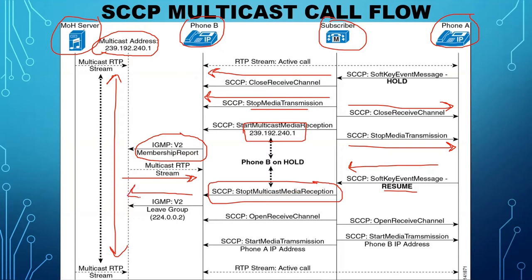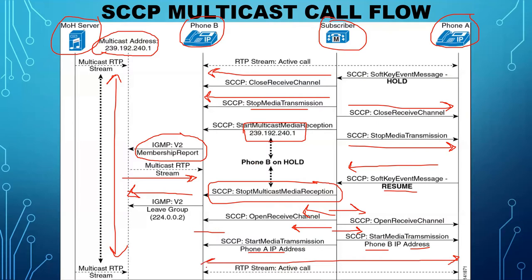After Phone B leaves the multicast group, the subscriber sends Open Receive Channel to both Phone A and Phone B. Then the subscriber sends Start Media Transmission to Phone B with Phone A's IP address, and to Phone A with Phone B's IP address. Once Phone A receives Phone B's IP address and Phone B receives Phone A's IP address, an RTP stream is re-established between Phone A and Phone B.